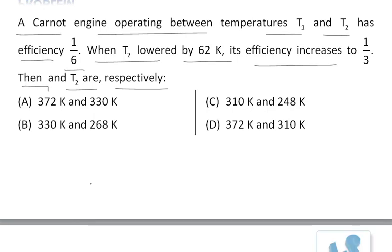We know that the efficiency of a Carnot cycle is given by η = 1 - T2/T1.